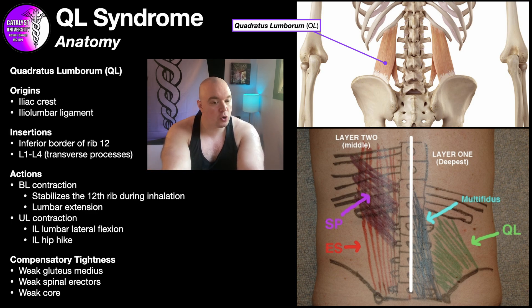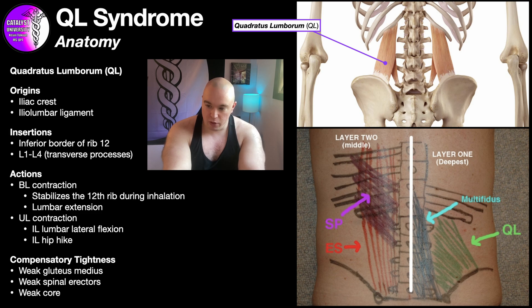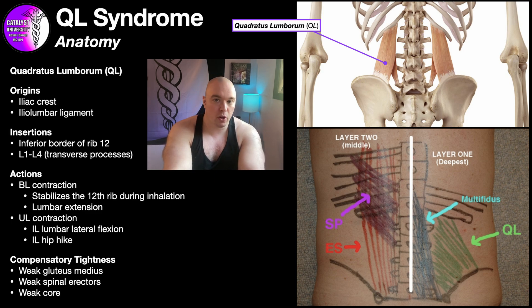One major cause is compensatory tightness due to a weak gluteus medius. Anytime you suspect QL syndrome, take a gluteus medius manual muscle test — preferably with a handheld dynamometer to get exact pounds of force. If the gluteus medius is weak on one or both sides, that's going to compromise frontal plane stability of the pelvis, and one way the body counteracts that is to tighten the QL. The gluteus medius is definitely needed for frontal plane stability, so in that case you would want to strengthen those muscles.